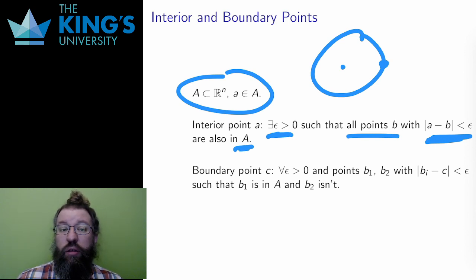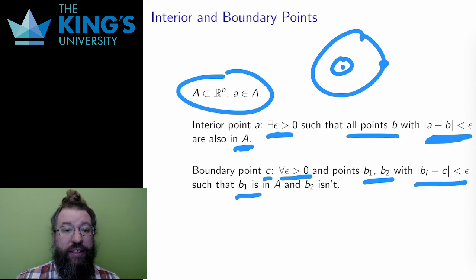That is, I can draw a little region around A and stay within the set entirely. And a point C is a boundary point if for all epsilon greater than 0 and two points both within epsilon of C such that one is in the set and one is not in the set. This is how I measure that something is on the edge. It is arbitrarily close to points both inside and outside the set.